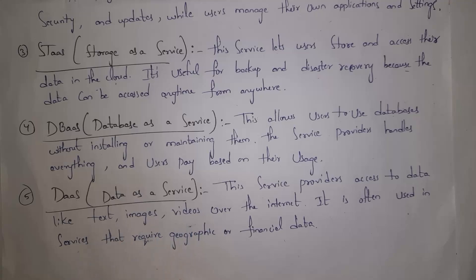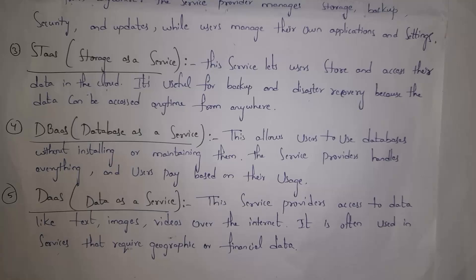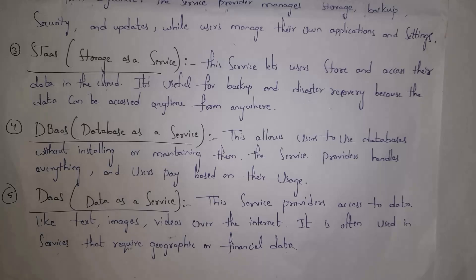The fifth service is Data as a Service, shortly called DaaS. For example, if I have a small software company doing a project related to animals, my company needs to collect complete information, images, and videos related to animals — but that is very tough. So in cloud, I can simply select Data as a Service and cloud service providers will give me complete data, videos, and pictures related to animals, saving my time.